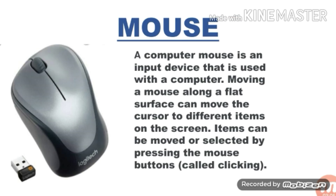Next is mouse. A computer mouse is an input device that is used with a computer. Moving a mouse along a flat surface can move the cursor to different items on the screen. Items can be moved or selected by pressing the mouse button. This is called clicking.